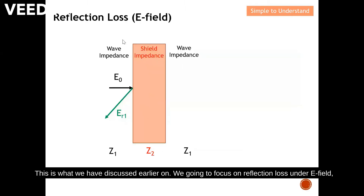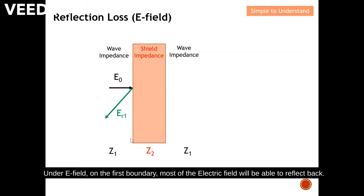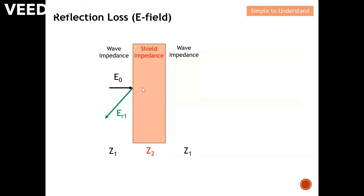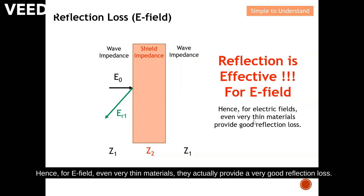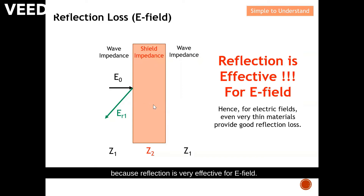This is what we discussed earlier — we're going to focus on reflection loss under E-field. The incident wave is predominated by electric field. Under E-field, on the first boundary, most of the electric field will reflect back and very little will penetrate through. Because of this, reflection is very effective for E-field, so even very thin material provides very good reflection loss.